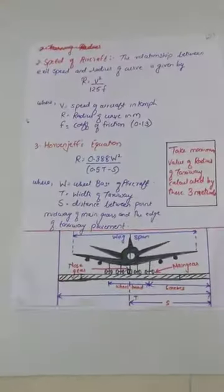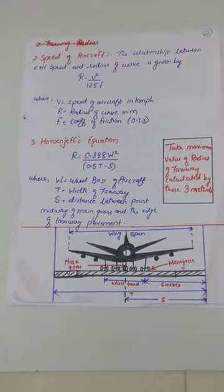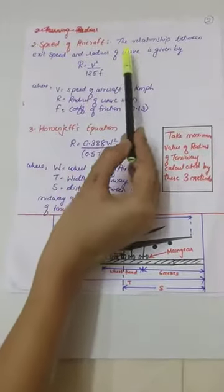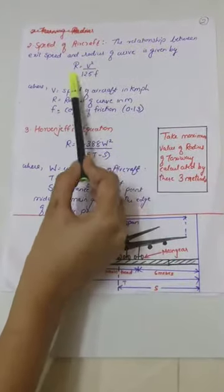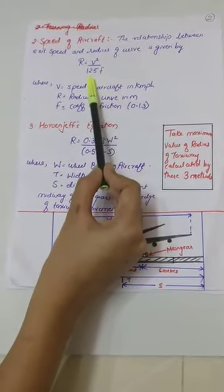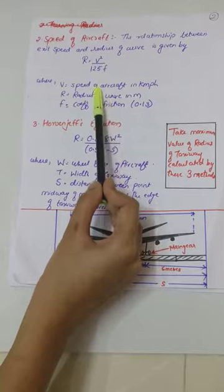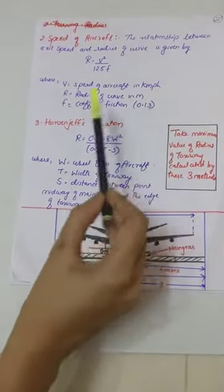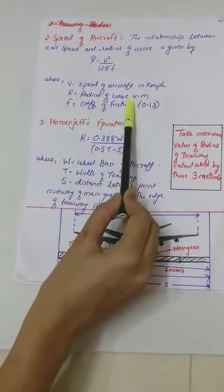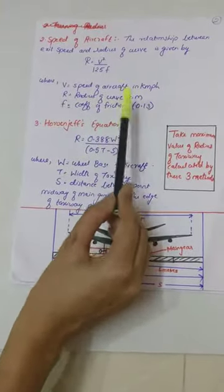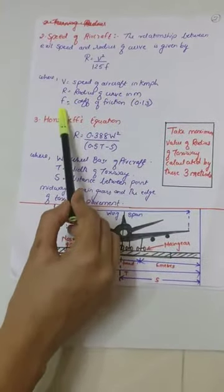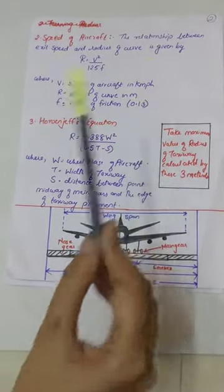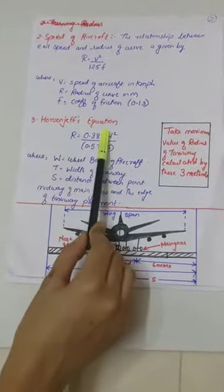The next criteria is the speed of aircraft. The relationship between the exit speed and the radius of the curve is given as R = V² / (125F), where V is the speed of aircraft in kilometers per hour, R is the radius of curve in meters, and F is the coefficient of friction which is usually taken as 0.13.